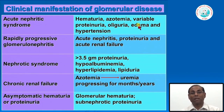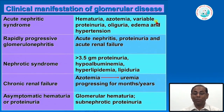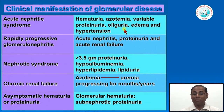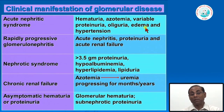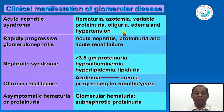Acute nephritic syndrome typically presents with hematuria, azotemia, mild to moderate proteinuria, lowering of urine volume (oliguria, and rarely anuria), edema—particularly puffiness around the eyes—and hypertension. The commonest cause is post-infective glomerulonephritis.